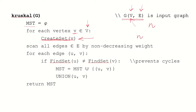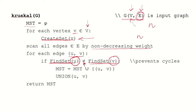Then we scan all the edges in the edge set E by non-decreasing weight — keeping the edge with the minimum weight first and going on increasing. For each edge UV, we perform Find-Set(U) and Find-Set(V). Find-Set means we find the representative set for vertex U and the representative set for vertex V, and then check if they are not equal.